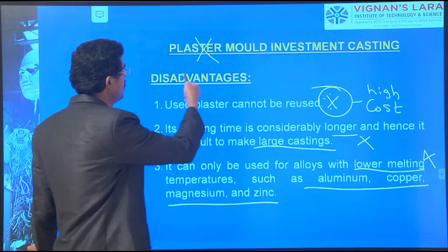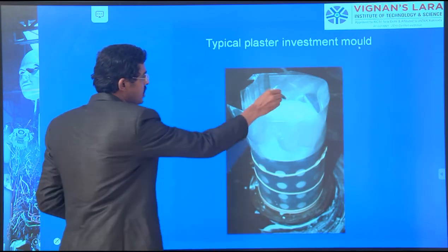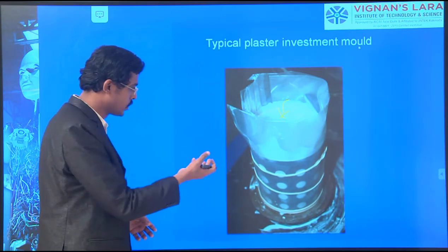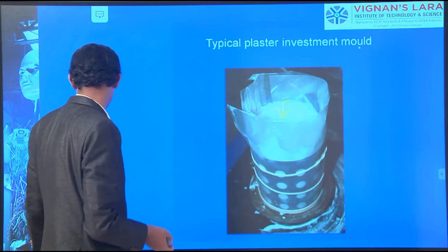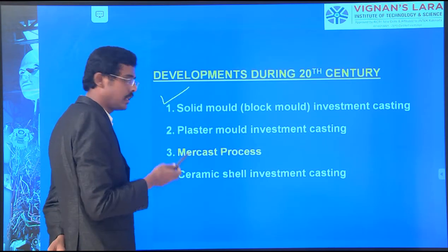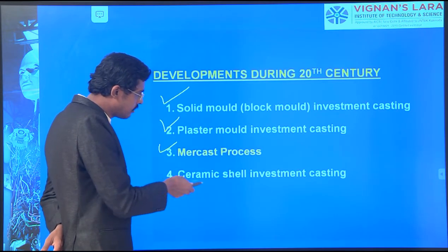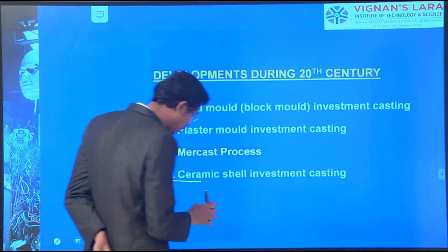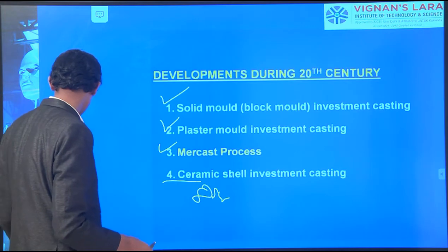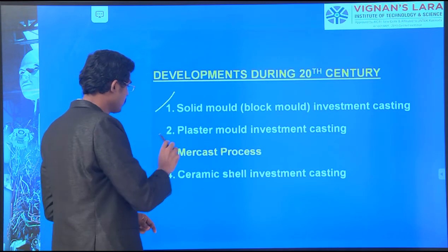So those are the disadvantages of plaster mold investment casting. This is a typical plaster investment casting mold - plaster material is poured inside, dried out, and the product is taken out. As of now we have seen solid mold and plaster mold simply. The Mercast process we have to see now, and then ceramic shell investment casting with eight steps.